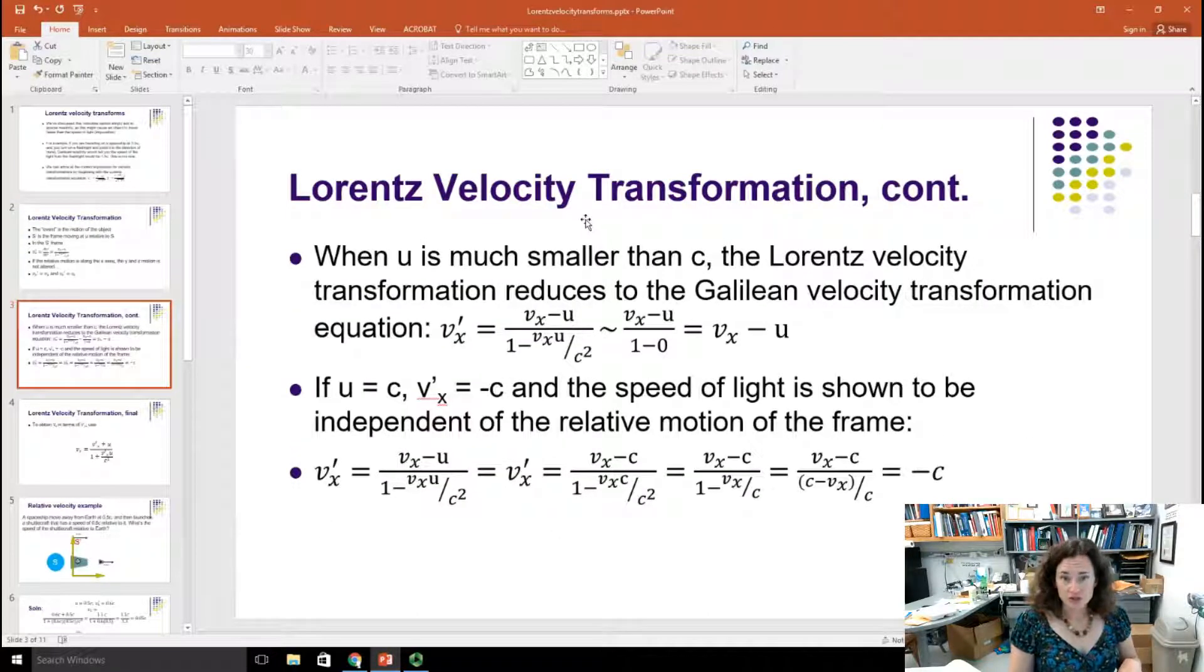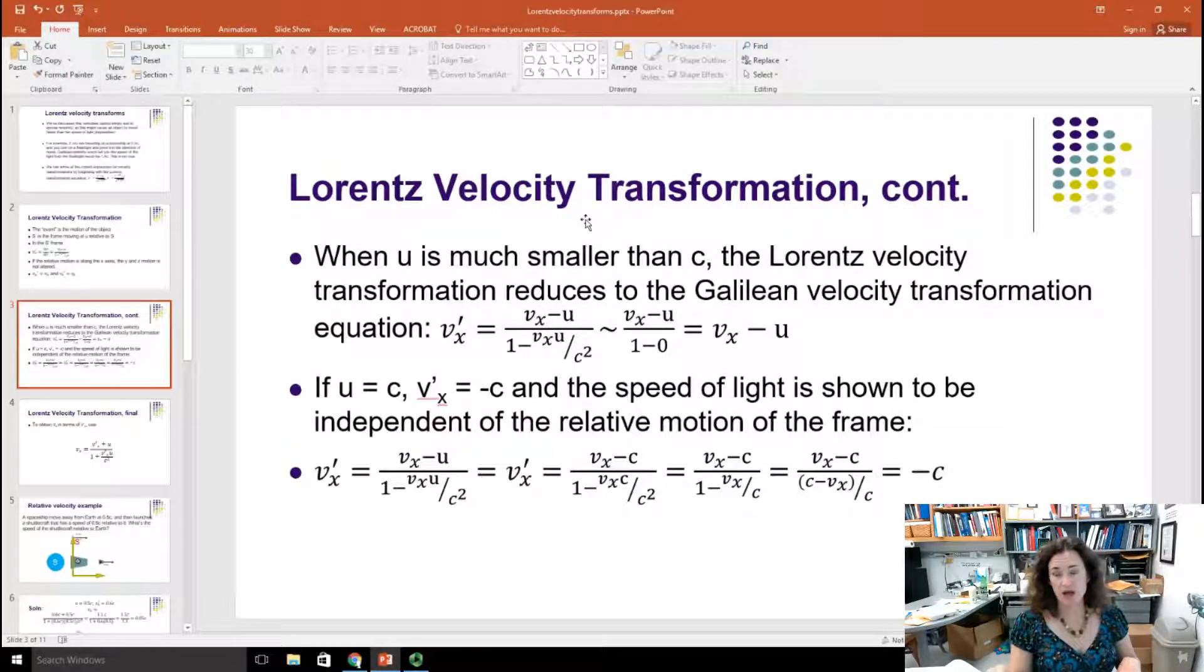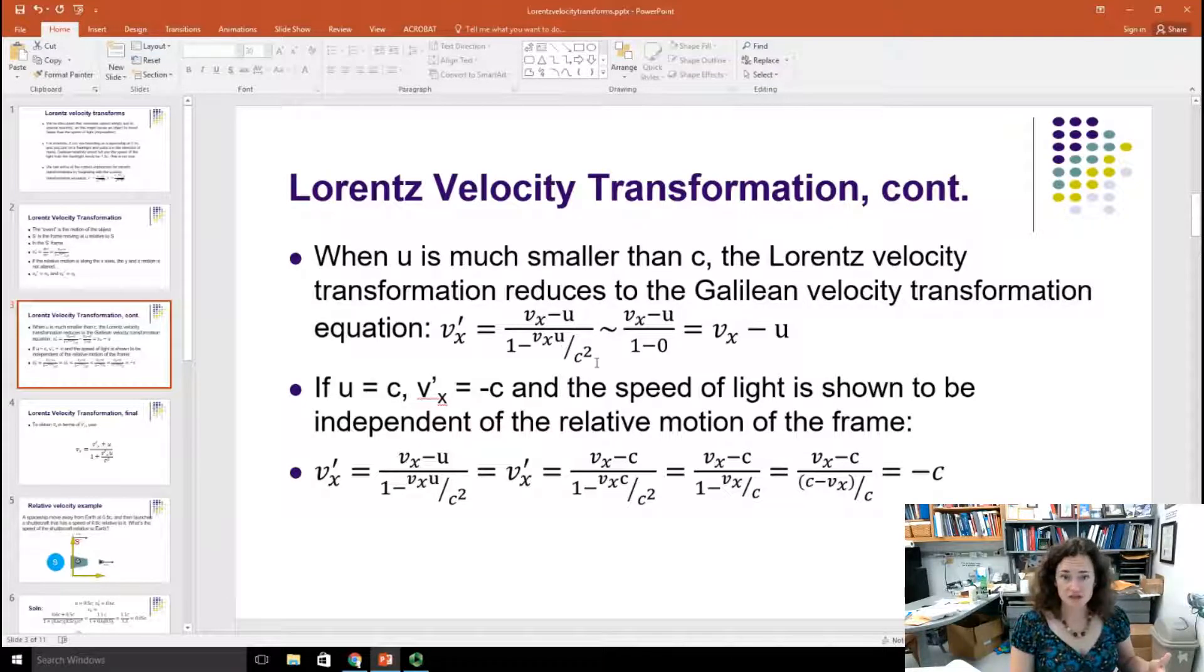If you look at this equation that we have, you can see a couple of points. First, if the speed of the frame U is much smaller than the speed of light, we can reduce to the familiar Galilean velocity transformation equations. So remember, we're going to start off with this equation: VX prime is equal to VX minus U over 1 minus VX times U divided by C squared.